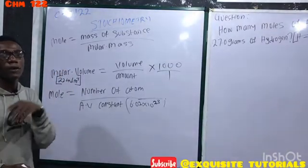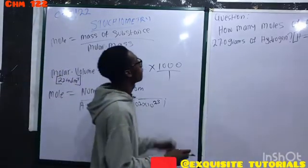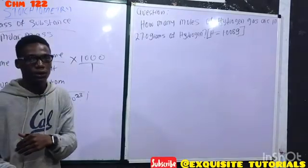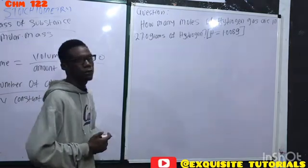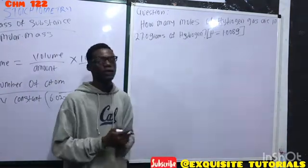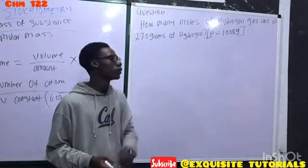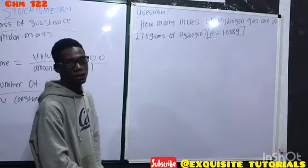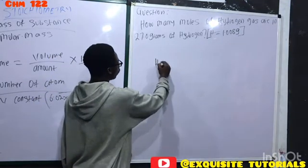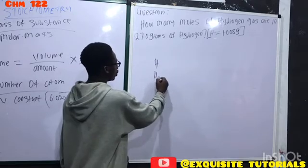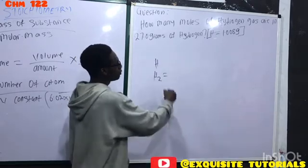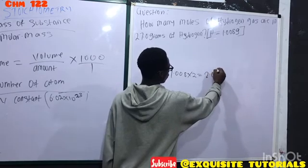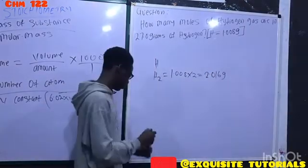The question says: how many moles of hydrogen gas are in 27 grams of hydrogen? Some people will have a problem here because they stated hydrogen gas, not hydrogen. The mass of hydrogen is 1.008, but they said hydrogen gas, so it's H₂. The mass should be 1.008 times 2, which is 2.016 grams.